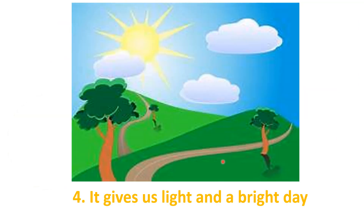It gives us light. When the sun rises, it rises in the sky and gives light to our house. You have seen that in the afternoon, you don't require extra light, because the sun rising is sufficient for light. And because of that light, the day is bright.